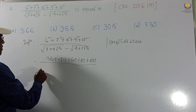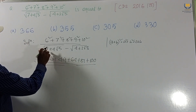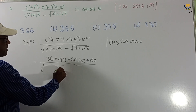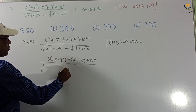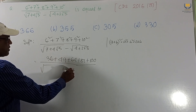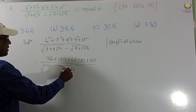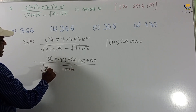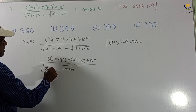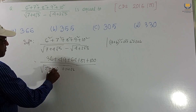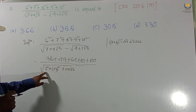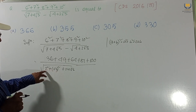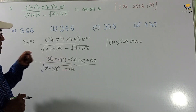Now for √(7 + 4√3): the 7 here means 2² + (√3)² = 4 + 3 = 7, and the 4√3 term comes from 2 × 2 × √3. So 7 + 4√3 = 2² + (√3)² + 2·2·√3, which fits the identity (a + b)².